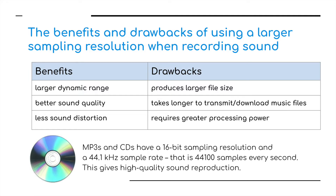There is a standard used generally for MP3s and CDs: they are sampled using 16-bit sampling resolutions and a 44.1 kilohertz sampling rate — that is 44,100 samples every second. This standard gives very high quality sound reproduction.